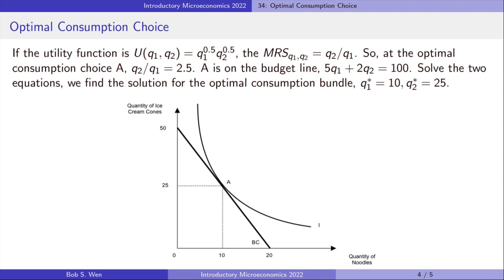The relative price is the rate at which the market is willing to exchange ice cream for noodles, whereas the marginal rate of substitution is the rate at which the consumer is willing to exchange ice cream for noodles. At the consumer's optimal choice, the consumer's valuation of the two goods, as measured by the marginal rate of substitution, equals the market's valuation, as measured by the relative price. As a result of this consumer optimization, the market prices of the goods reflect the value that consumers place on the goods.